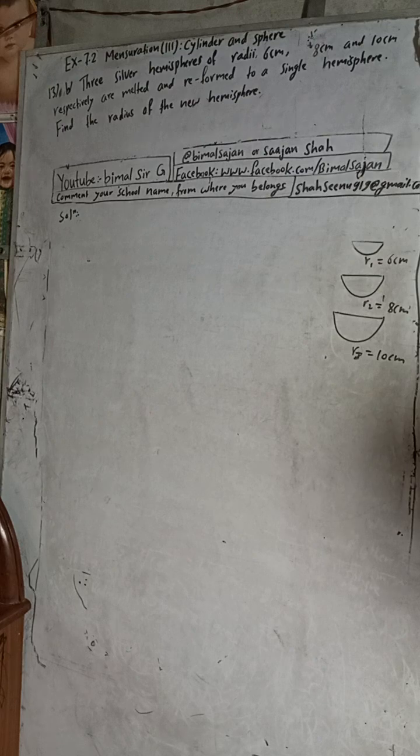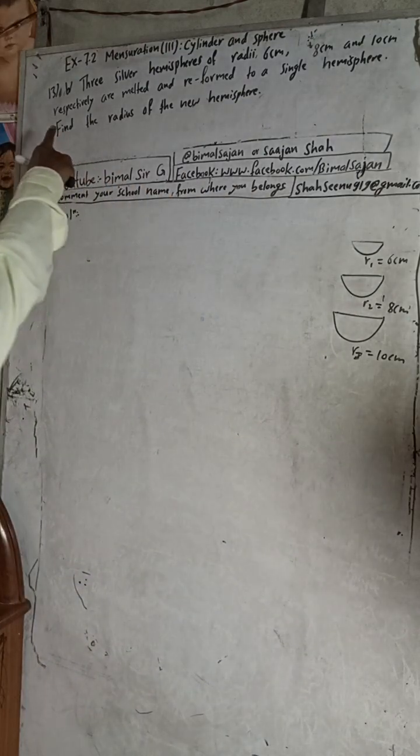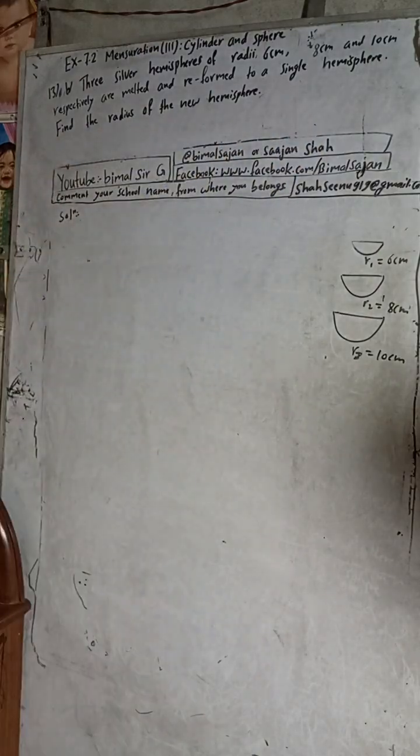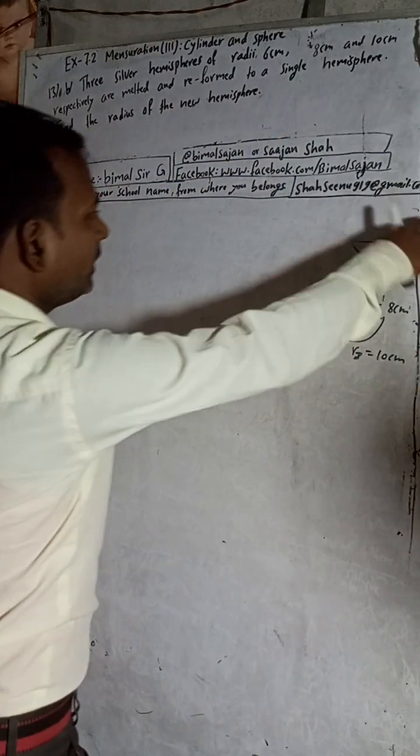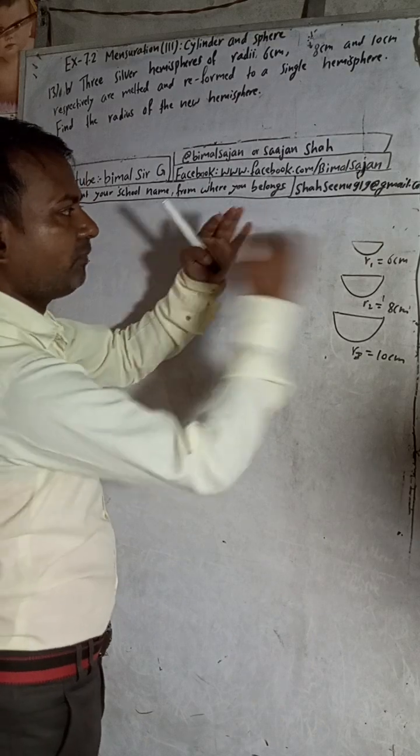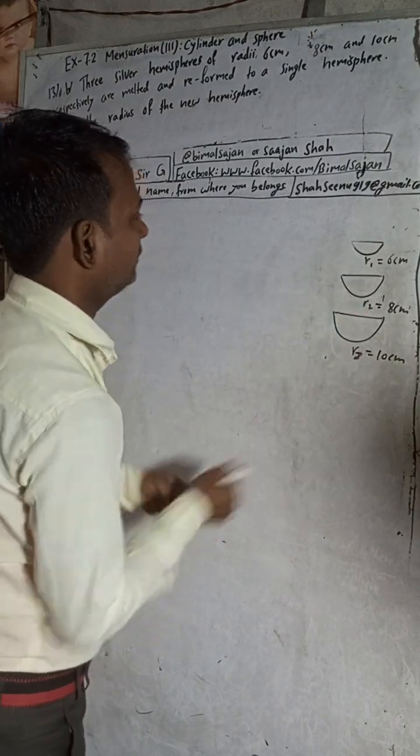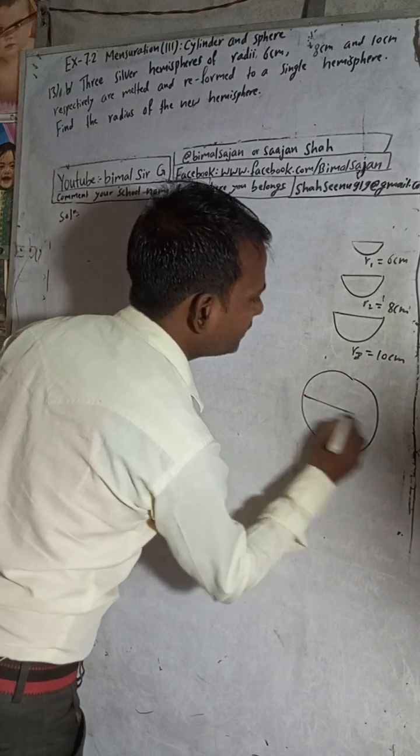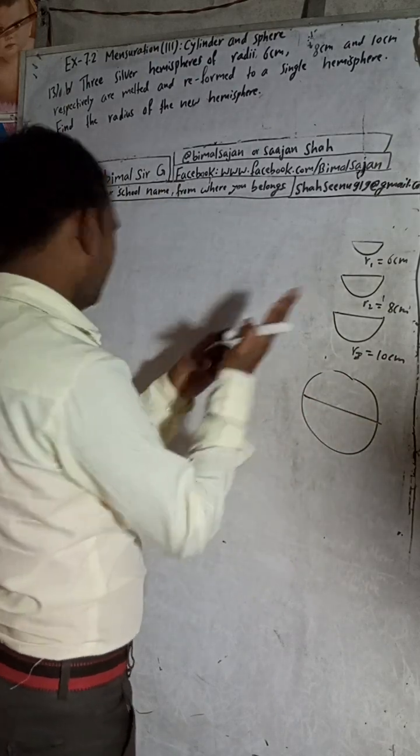Three silver hemispheres of radius 6 cm, 8 cm and 10 cm respectively are melted and reformed to a single hemisphere. Find the radius of the new hemisphere. There are three hemispheres, hemispheres means half of a sphere. Suppose this is a bigger sphere, so half is called hemisphere.